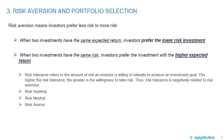Thus, risk tolerance is negatively related to risk aversion. In a later LOS, we're going to look in more detail at individuals who are risk-seeking versus risk-neutral and risk-averse.